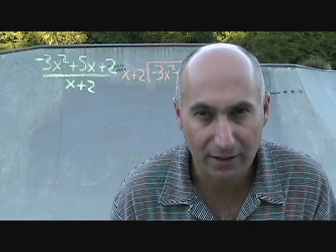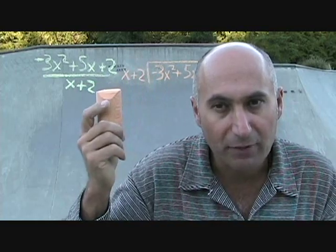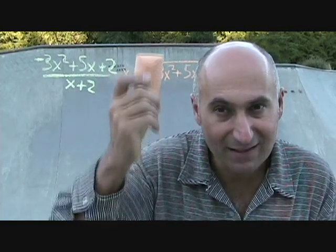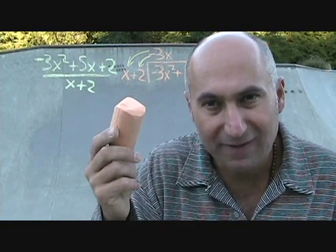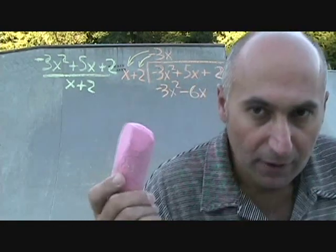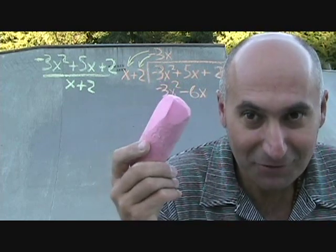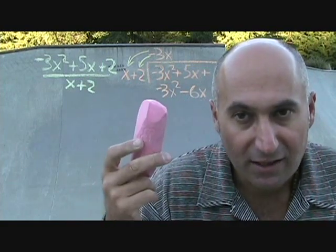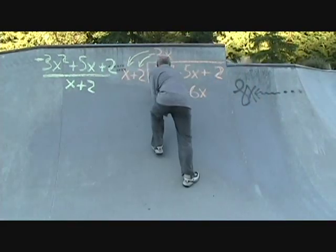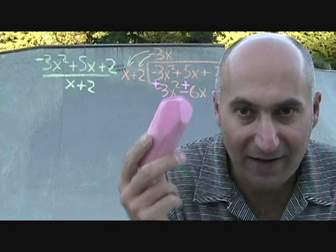What do you multiply x by to give you negative 3x squared? You multiply by negative 3x. So put negative 3x on top. Then negative 3x times x is negative 3x squared, and negative 3x times 2 is negative 6x. We're subtracting the bottom from the top: minus negative 3x squared and minus negative 6x. Changing the signs and adding: negative 3x squared plus 3x squared is 0, and 5x plus 6x is 11x.